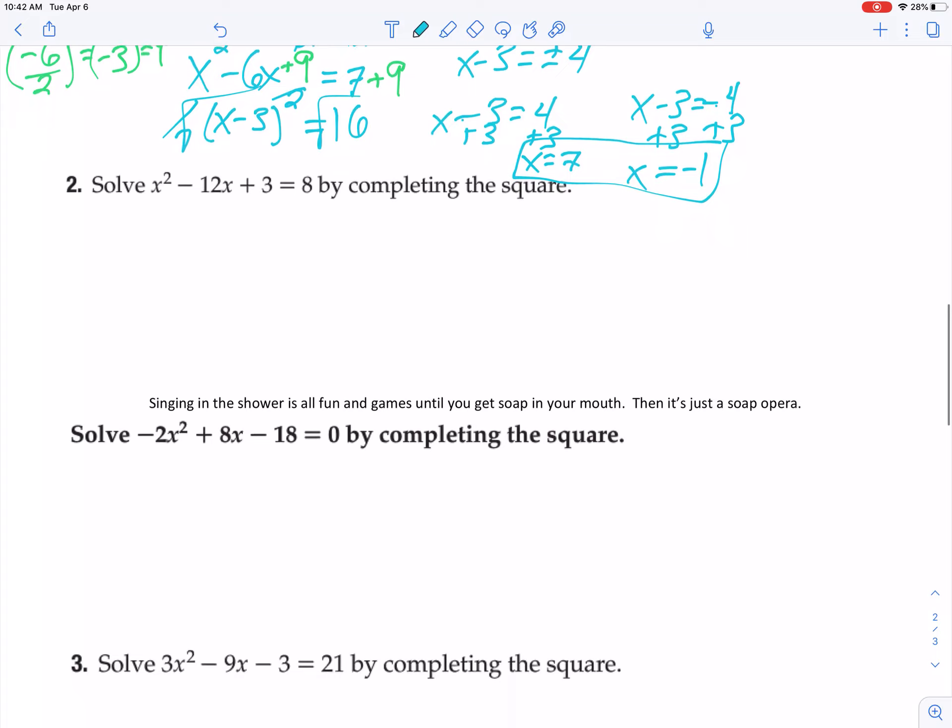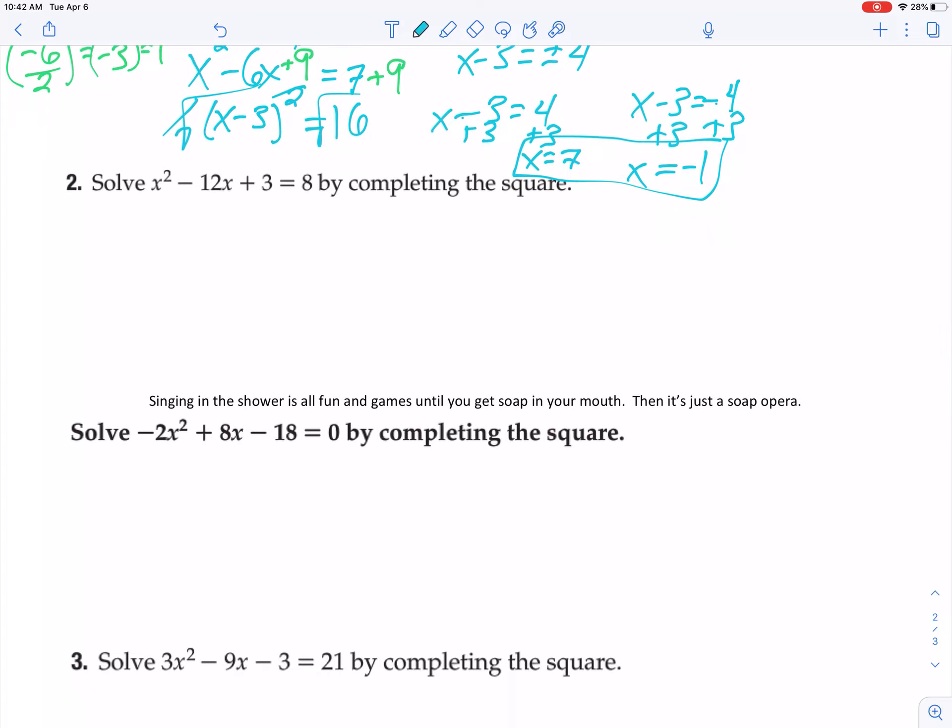Now sometimes weird things can happen. Let's look at this next example here. Notice that it has a number outside of the x squared. We don't like that very much, so get rid of it. Because it's being multiplied in, you can just divide it away, but you are going to have to divide everything. So notice all the places that I divide by negative 2. I divide it everywhere. So x² plus, I guess actually I could say minus, 4x plus 9, and it's still just going to equal 0.